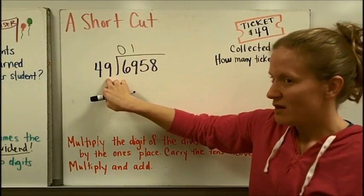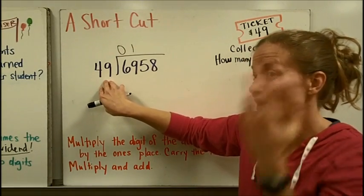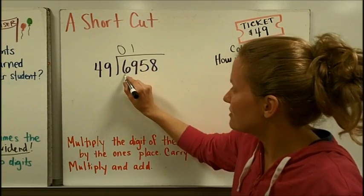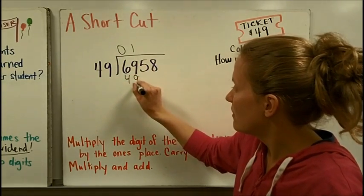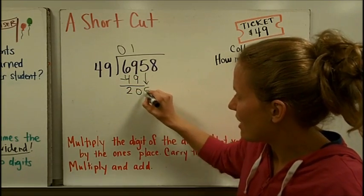Because if I'm thinking money, twice would be really close to $50. Twice would be $100. That looks like too much. 1 times 49 is $49. Subtract, and I get 20, and I'm going to bring down the 5.